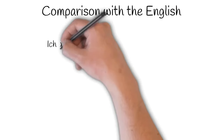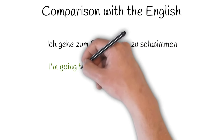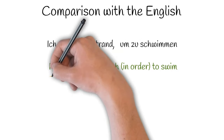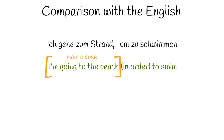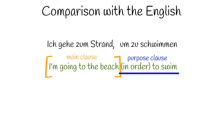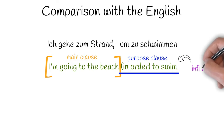Let's do a comparison with the English. We'll start with a simple German sentence: 'Ich gehe zum Strand um zu schwimmen.' And this means, 'I'm going to the beach in order to swim.' The 'in order' is in brackets because you don't have to have it — you could just say 'to swim,' which also expresses purpose. The sentence has two main parts: the main clause, 'I'm going to the beach,' and a purpose clause, 'in order to swim.' In the purpose clause, the verb is in the infinitive — 'to' plus the base form of the verb, swim.